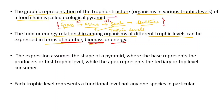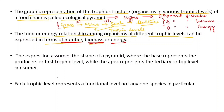This ecological pyramid is of three types: pyramid of number, pyramid of biomass, and pyramid of energy. The shape is used where the base represents the producers or the first trophic level, while the apex represents the tertiary or top-level consumer.